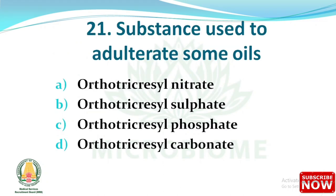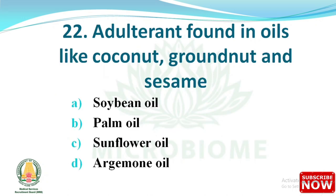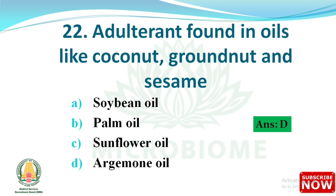Next question: the substance used to adulterate some oils is — options: (A) ortho-tricrysyl nitrate, (B) ortho-tricrysyl sulfate, (C) ortho-tricrysyl phosphate, (D) ortho-tricrysyl carbonate. The right answer is option C, ortho-tricrysyl phosphate. Next question: the adulterant found in oils like coconut, groundnut, and sesame is — options: soybean oil, palm oil, sunflower oil, or argemone oil. The right answer is option D, argemone oil.